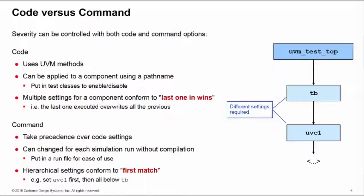When you have multiple hierarchical settings on the command line, these conform to a first match methodology. If you set the UVC1 first and then you set everything below TB second, because the UVC1 hierarchy has already been assigned a value, it's a set and lock philosophy. Therefore the second setting to everything below TB will not affect the UVC1 hierarchy. It's already been given a value.